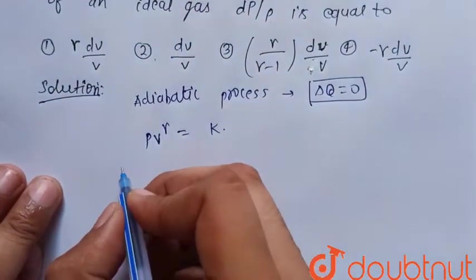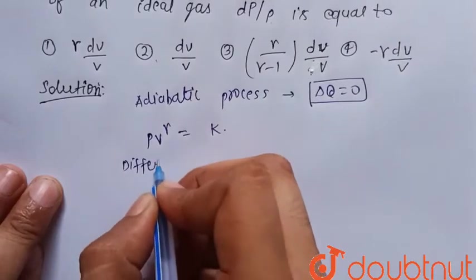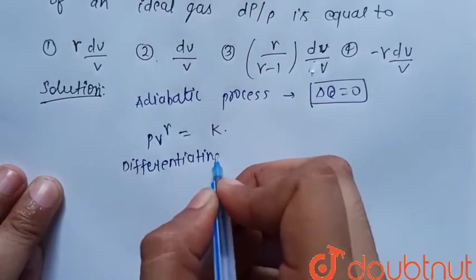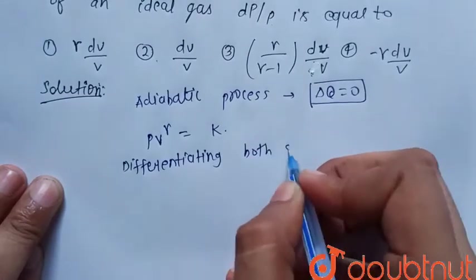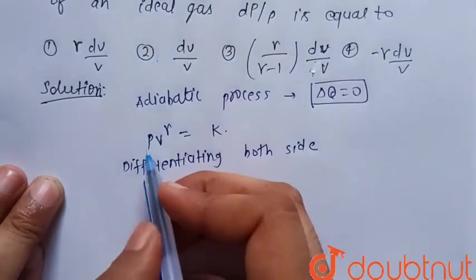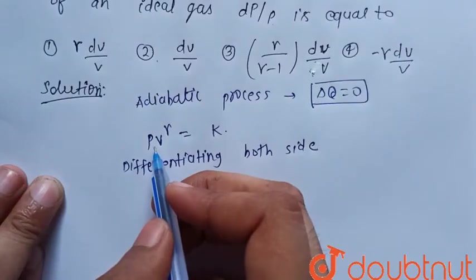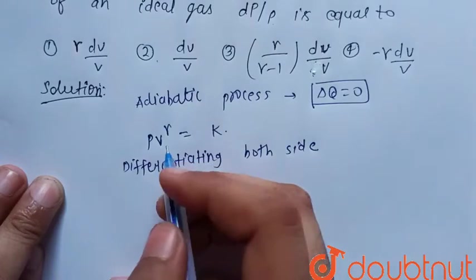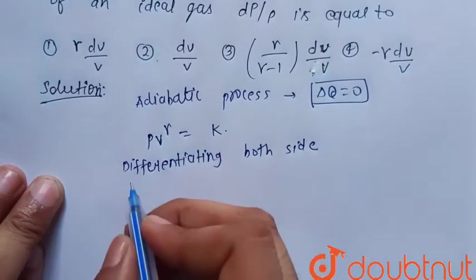So now differentiate both sides. Now differentiating both sides. We get this is the u into v type differentiation. Differentiation of u into v is u dash v plus v dash u.